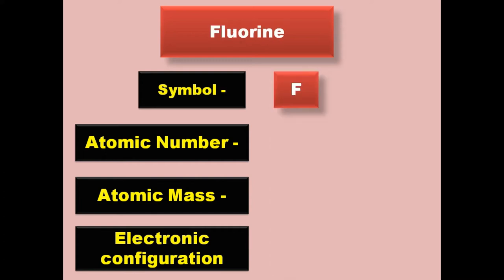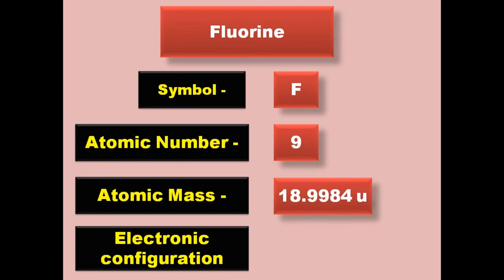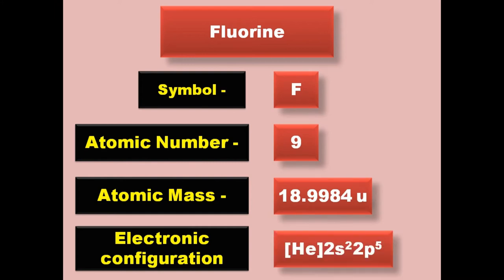Fluorine has symbol F, atomic number 9, atomic mass 18.9984, electronic configuration [He] 2s2. Fluorine exists in gaseous form at room temperature.